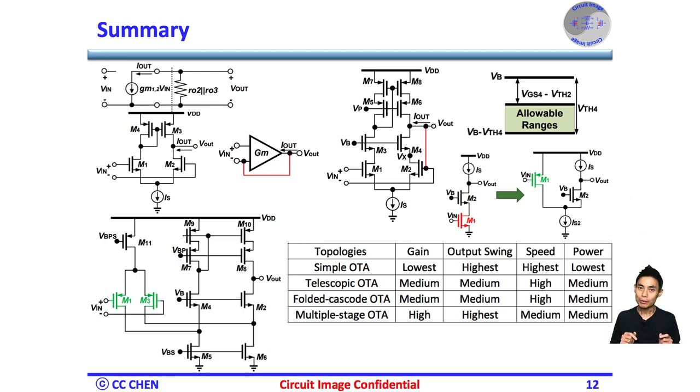From the summary table diagram, the folded cascode OTA has several average performance as follows. It's medium gain and medium swing under medium power and speed, making it more attractive than others. In addition, the folded cascode OTA is easier to stabilize in design. Lastly, the folded cascode OTA would have a larger input common mode range than a standard differential stage.